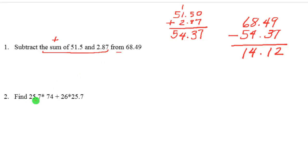Okay, this one says find 25.7 times 74 plus 26 times 25.7. So this is order of operations, and as you know, multiplications would go before this addition.